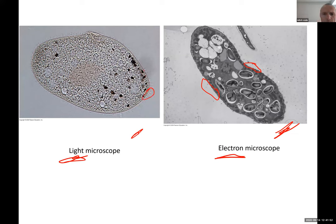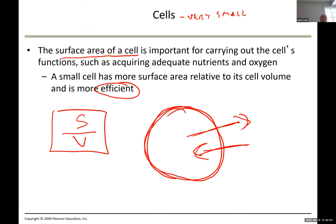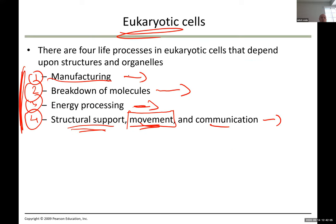Cilia are involved in movement — they look like rowers. For structural support, inside the cell there are protein tubules that cross the whole cell — these are the cytoskeleton, there for support and to guide vesicles toward their destinations. Life inside the cell literally looks like a city, with little freeways and highways so vesicles can get from one point to another efficiently.